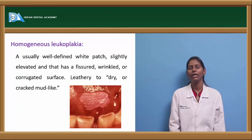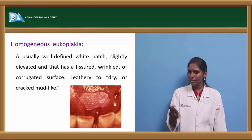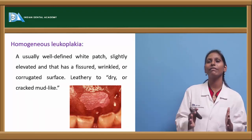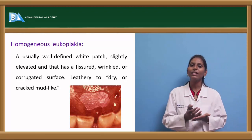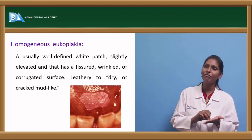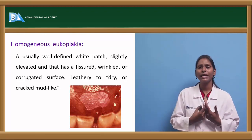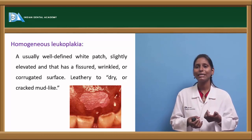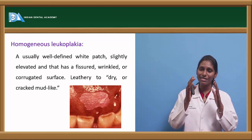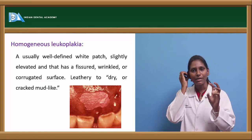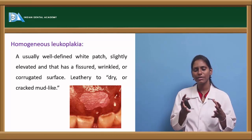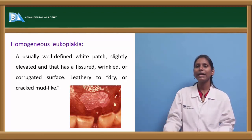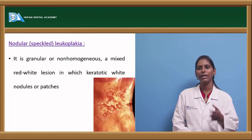Homogeneous leukoplakia is a well-defined white patch, slightly elevated. It can have slight fissures, wrinkling, or a corrugated surface. On palpation it is usually leathery and dry, and it has a wrinkling appearance like cracked mud — a sun-dried cracked mud appearance — that is how we can describe homogeneous leukoplakia.